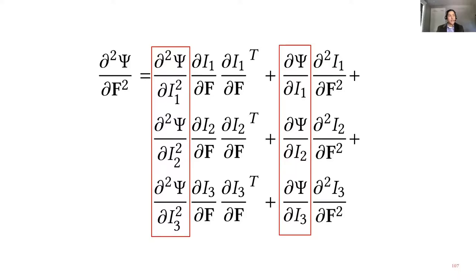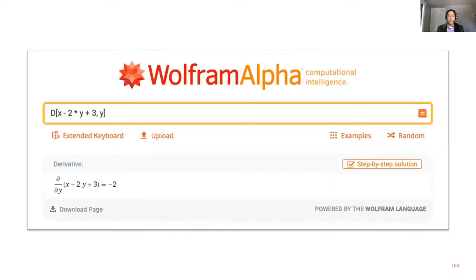What's left over is six scalar derivative expressions — this is just introductory calculus, taking the derivative of a scalar function with respect to another scalar. You can use automatic differentiation, going to Wolfram Alpha and having it take all the derivatives for you. Once you have those in hand, you have the force Jacobian of your energy. Don't feel bad about using automatic differentiation — I do it all the time. This isn't a test; all you want is a robust simulator.